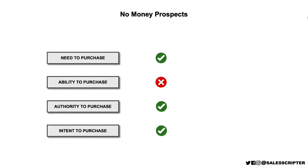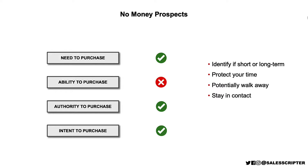If the prospect is weak in the area of ability to purchase — they need what you sell, they're the decision maker, but there's zero funding — this is a no-money lead. Identify whether it's a short-term or long-term issue. Is there no funding this year and you just need to position yourself for next year? Or is the lack of funding going to exist for many years? If it's short-term, stay engaged so you can be there when funding becomes available. If it's long-term, you may want to walk away. Stay in contact using automation — sending emails so that when the budget comes available, you're fresh in their mind.